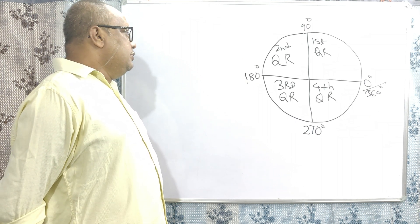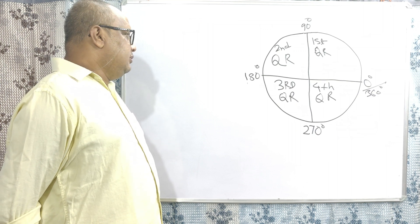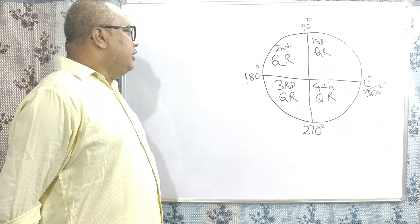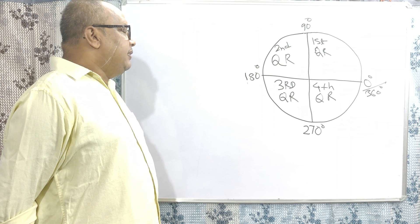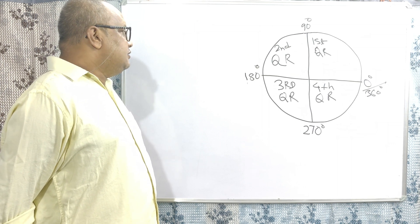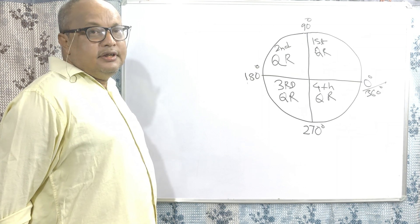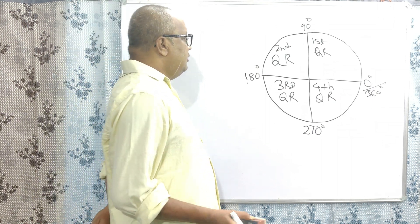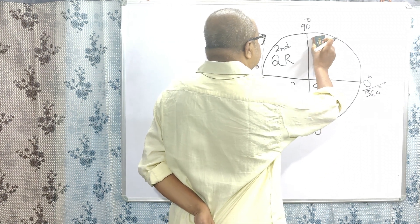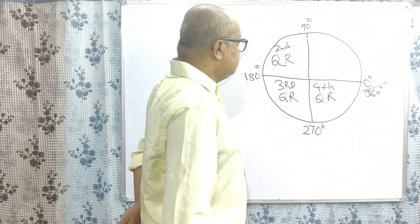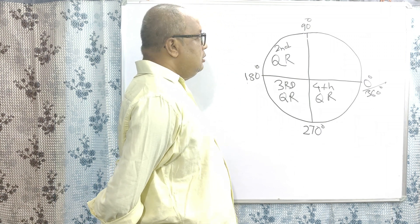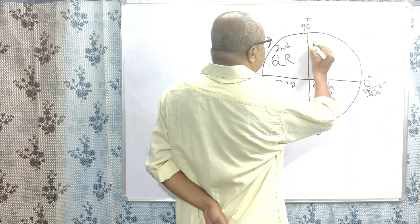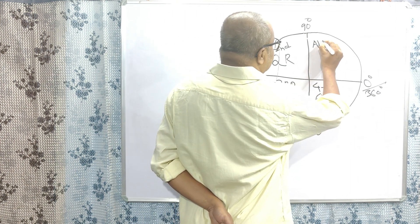We will need to find the trigonometric value of any angle. Since there are four quarters, there are some rules and regulations. In the first quarter, all trigonometric values are positive.